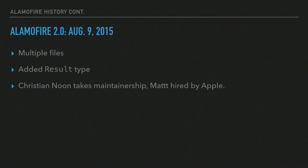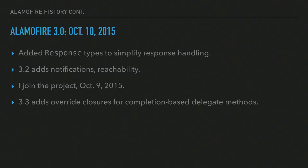Alamofire 2.0, August 9th, 2015, finally separated the library into multiple files, added the result type for the first time, and Christian Noon took over maintainership because Matt was hired by Apple as a documentation writer. Matt has since escaped and is back to writing books and maintaining NSHipster, SwiftDoc.org, and flight.school. Alamofire 3.0 came out October 10th, 2015 — not long after 2.0 due to a breaking API change. This version added various response types. I joined the project around that time, recruited by Christian because I had been involved in the GitHub issues forum.